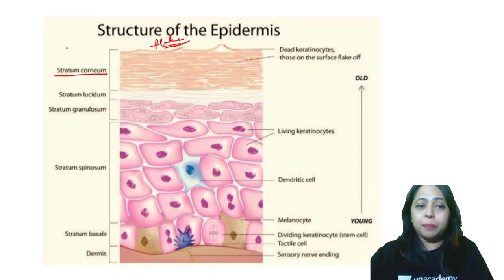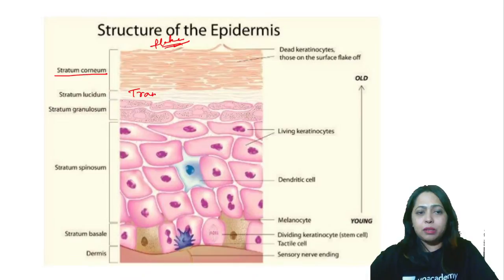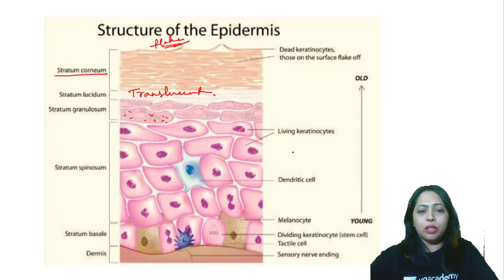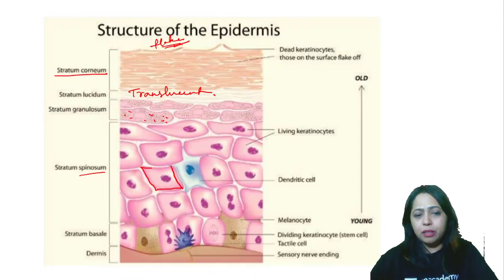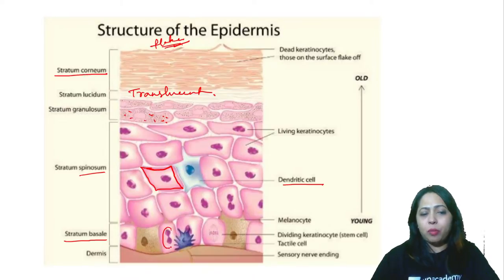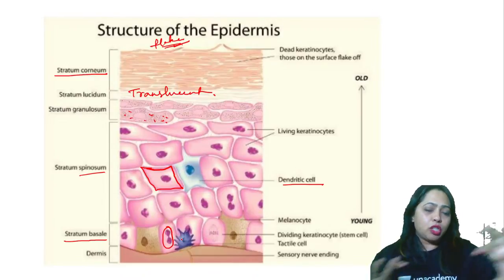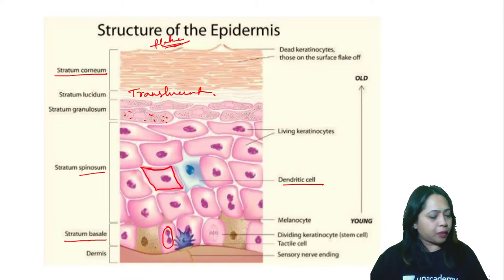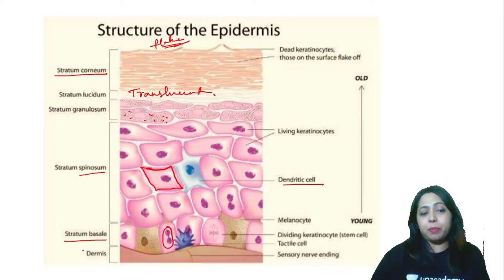Then you have the lucidum — it is a translucent layer. Granulosum has all these granules. The spinosum cells have those spine-like edges that are pulled, and between them are dendritic cells. Then there is the basale. Basal cells are present there, and some of them are in the process of division — you can see cells just about to divide, called dividing keratinocytes or stem cells. There are also sensory nerve endings.